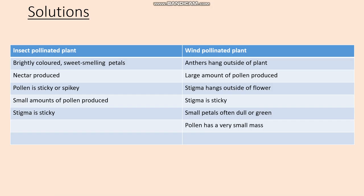Okay, so that's the end of this lesson. You should be able to identify the different parts of a flower and what those different parts do. You should be able to tell me what is meant by the term pollination, and you should be able to tell me how different plants are adapted according to how they are pollinated.